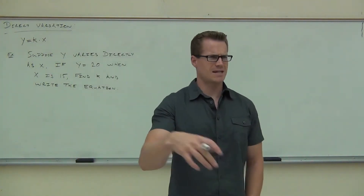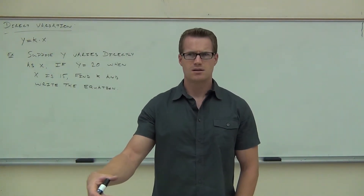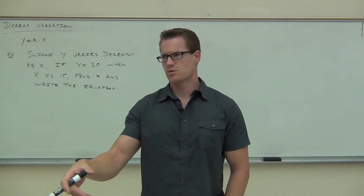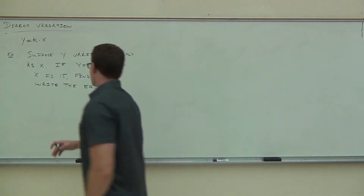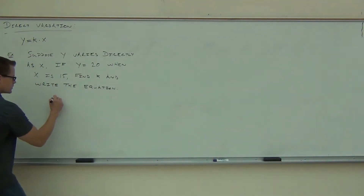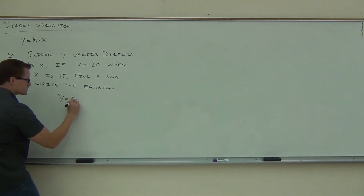The key word there to represent k times — what is that? Various directly. So we're talking about direct variation. We know we're doing y equals k times x.